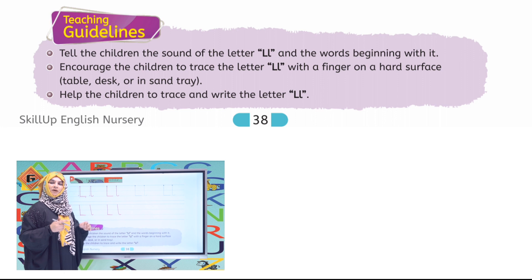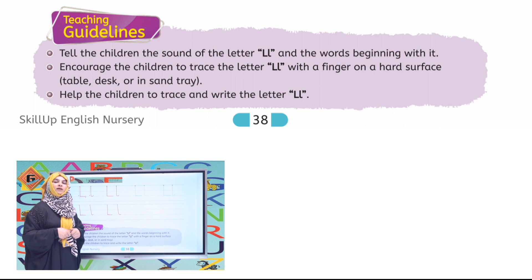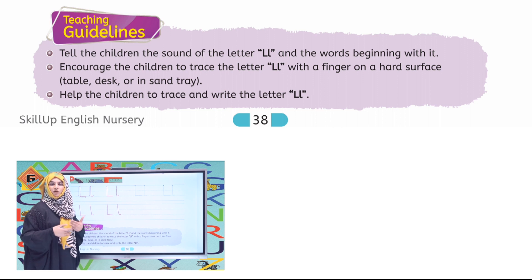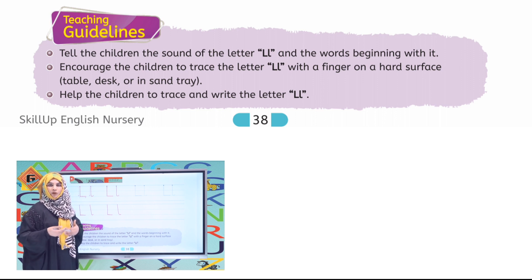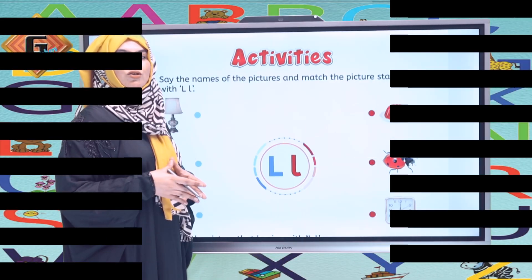Now we have the teaching guidelines. Teachers can tell the correct letter name and letter sound and other words starting with letter L, and also teach the formation. With the formation, you have to encourage the children to trace letter L — like on the air, on the table, on the carpet — and then help the children to trace letter L and independently write letter L.